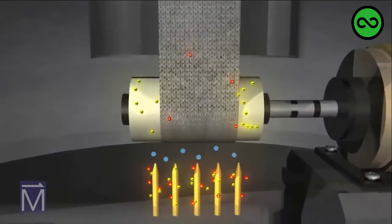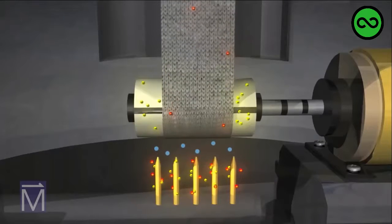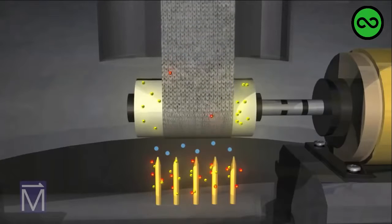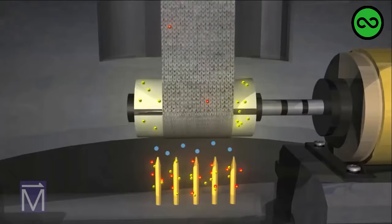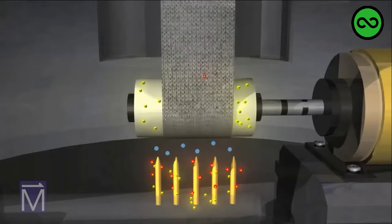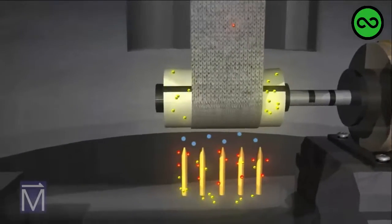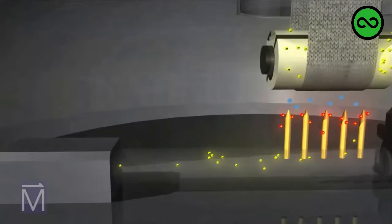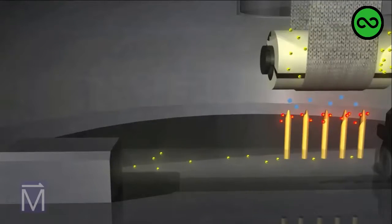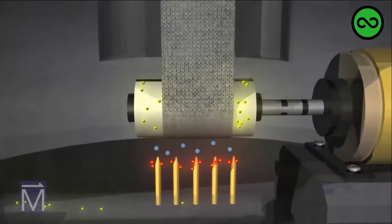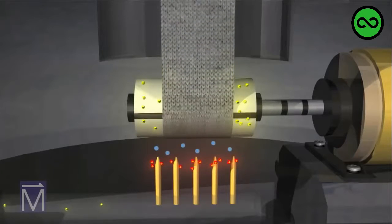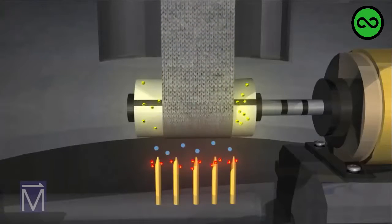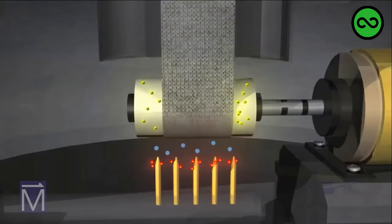Meanwhile, something else is going on in the metal comb positioned just under the roller. Metal is a great conductor of electricity, meaning electrons move very easily through it. Because like charges repel each other, the large amount of electrons that have built up in the roller repel electrons away from the tips of the metal comb, leaving those comb tips with a positive charge. Now there is an electric field in the air between the positive comb tips and the negative roller.